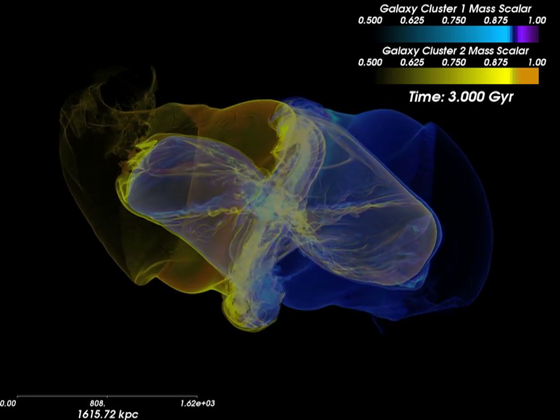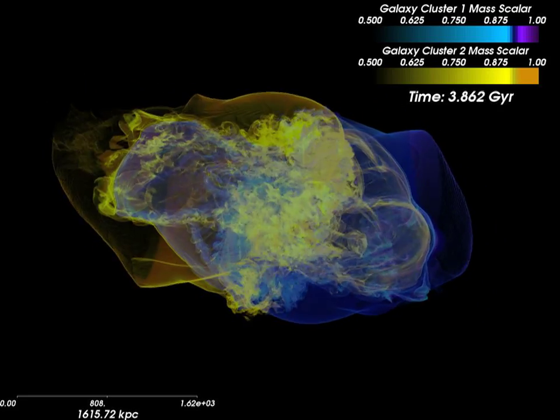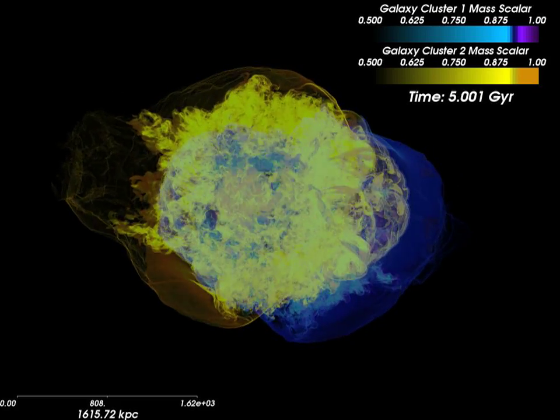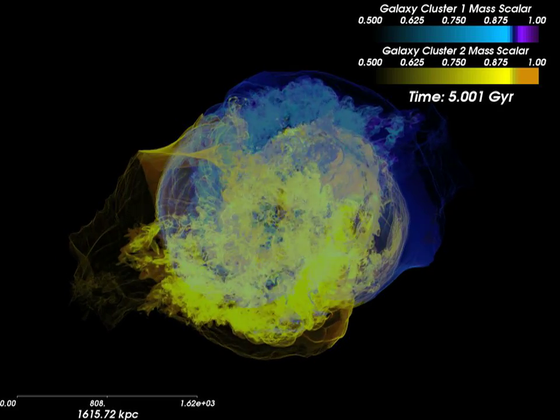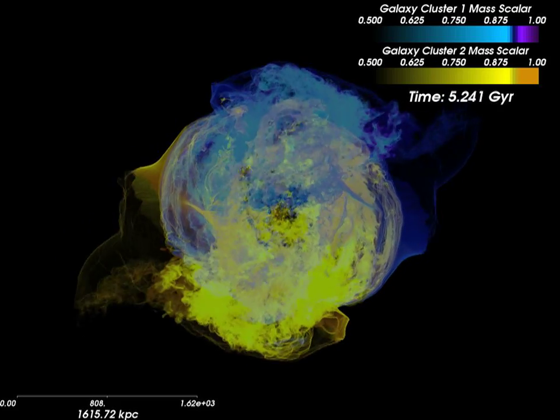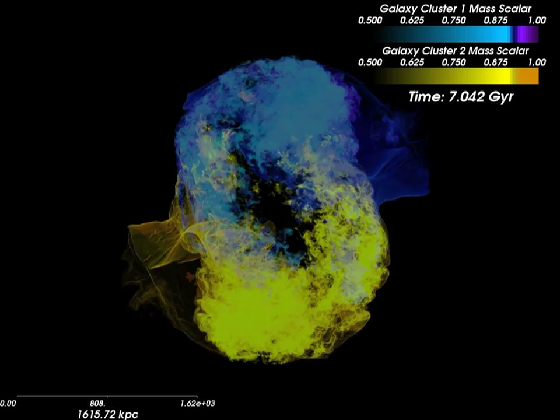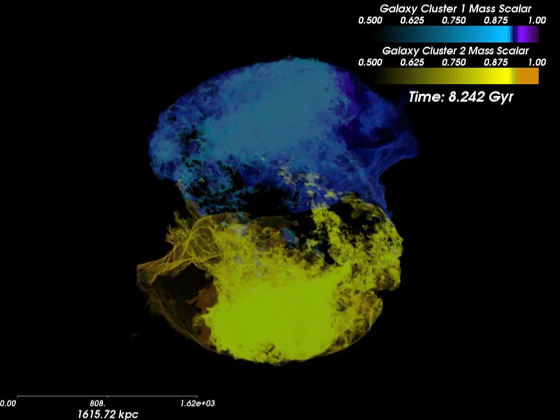Large features such as plumes and bridges form during the course of the merger as the gas is dragged along under the gravitational influence of the dark matter. The orbital motion of the two clusters stirs the intracluster medium, driving turbulent motions and heating up the gas further.